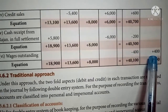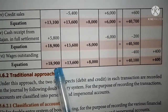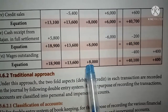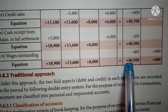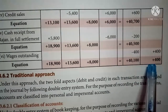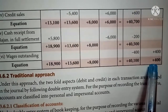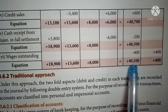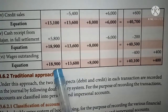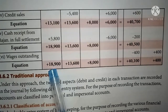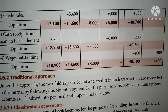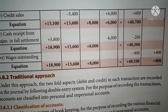You have to pay 400 rupees in the future. Final equation: cash 18,900, stock 13,600, machinery 8,000, debtor nil, capital 40,100, outstanding wages (liability) 400. While totaling, the right side totals 40,500 and the left side also totals 40,500, so the equation is tallied. Likewise, you can prepare the accounting equation.